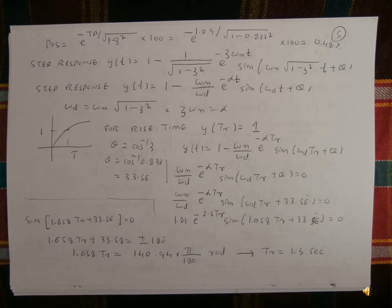Substituting values: 1.81 multiplied by e to the power of minus 2.5·tr, times sin of 1.058·tr plus 33.5 equals 0. Therefore sin of 1.658·tr plus 33.5 equals 0. So 1.658·tr plus 33.5 equals plus or minus 180 degrees. Therefore 1.658·tr equals 140.94 multiplied by π over 180 radians, giving tr equal to approximately 1.5 seconds.